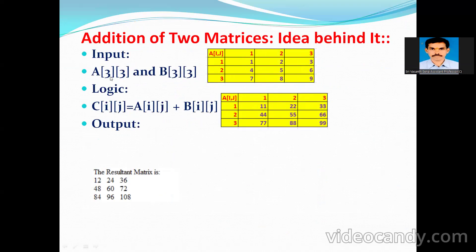The idea behind addition of two matrices: first, you need to read a 3×3 matrix A with elements 1, 2, 3, 4, 5, 6, 7, 8, 9 across three rows. Similarly, you need to read the B matrix with elements 11, 22, 33, 44, 55, 66, 77, 88, 99. The logic is: C[i,j] = A[i,j] + B[i,j].